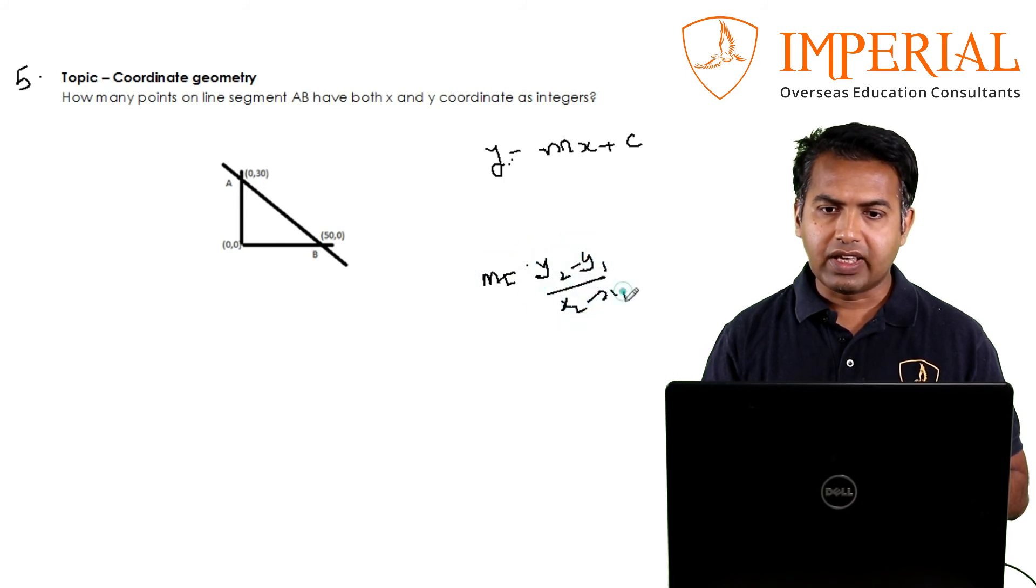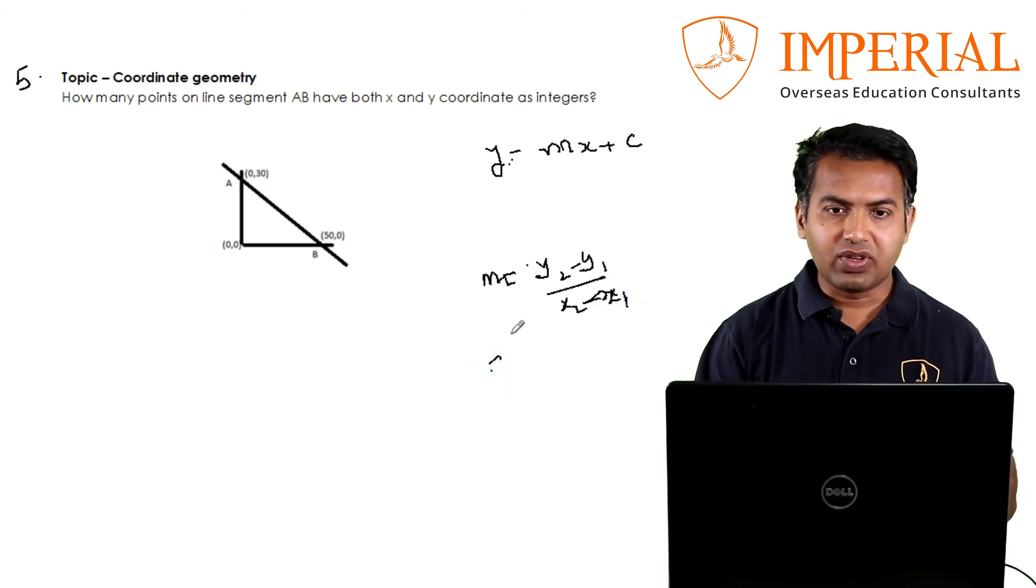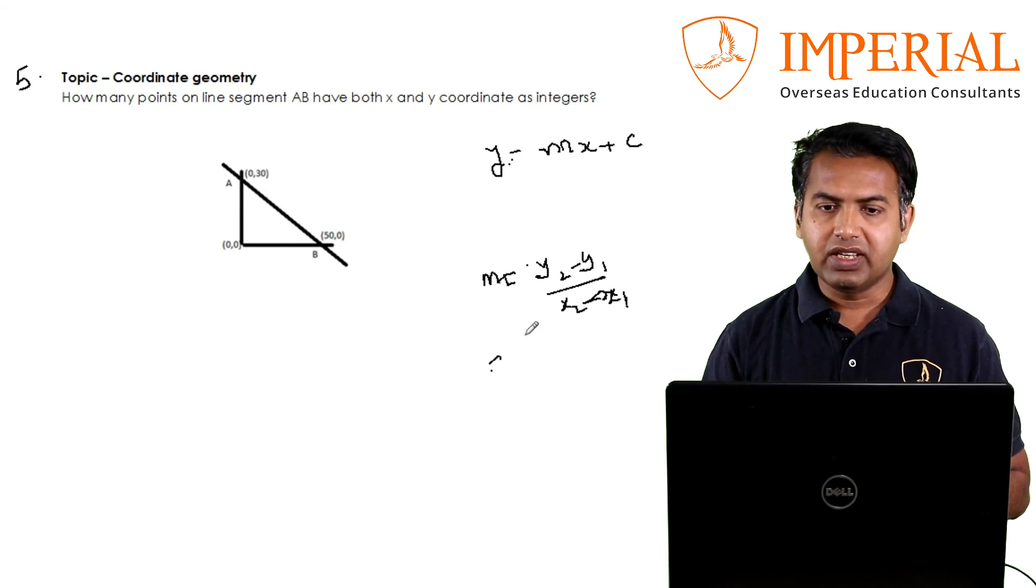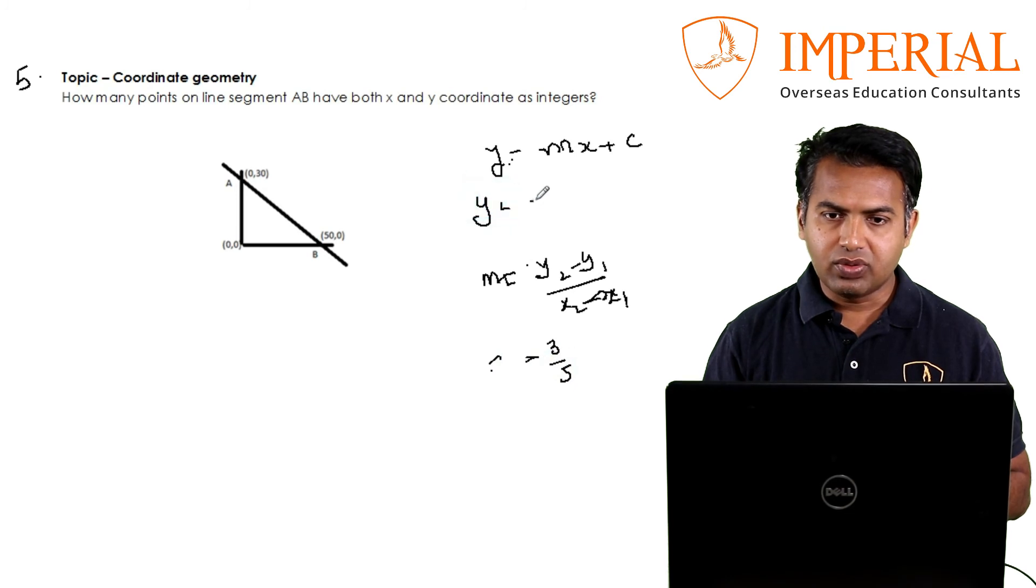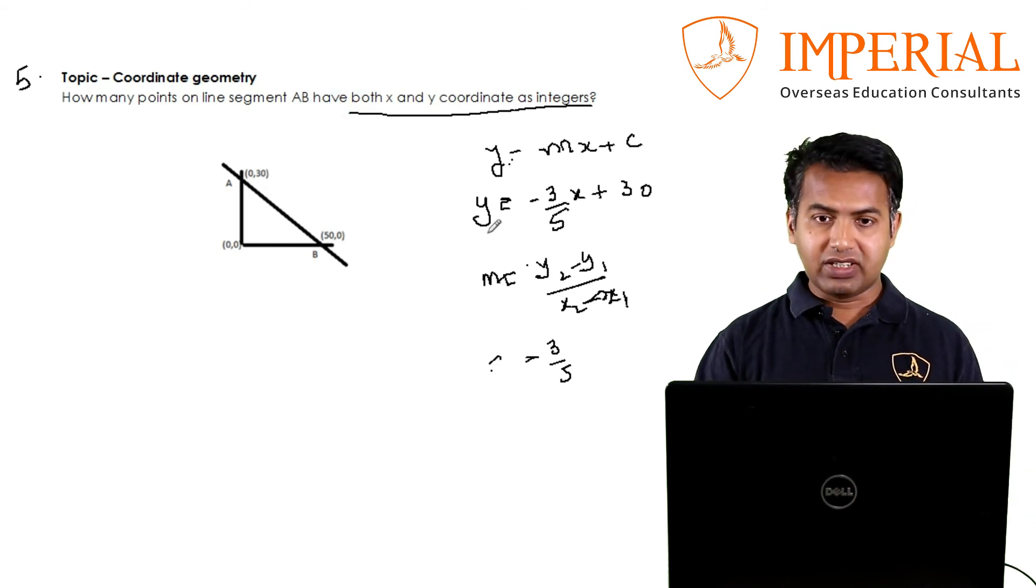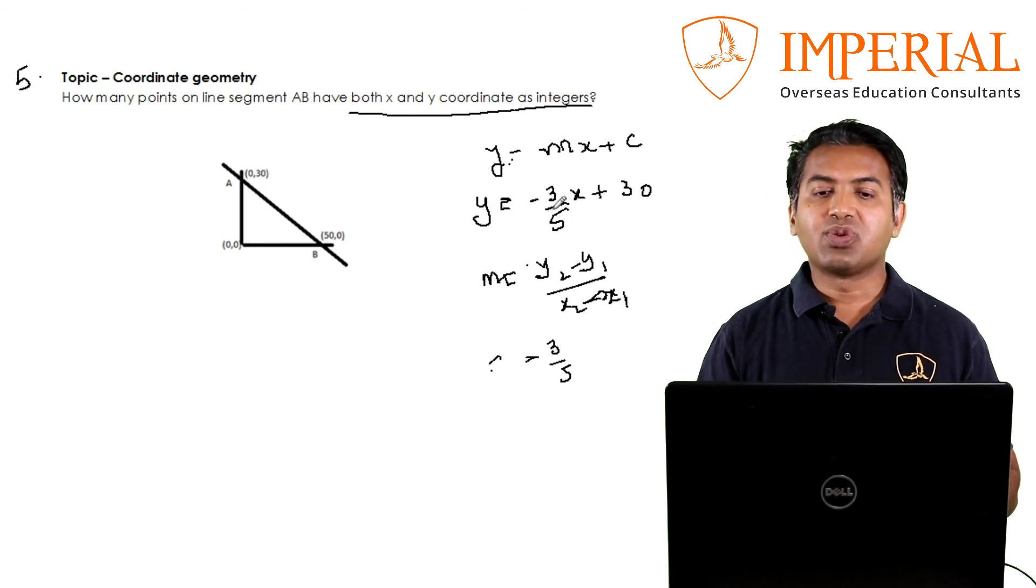We'll use these two concepts here. Here's your equation, there's the two points. Your slope here, we'll use this formula, so you will get 30 minus 0 upon 0 minus 50, so it'll be minus 3 by 5. So y equals minus 3 by 5 x plus the y intercept here is 30. The question says both x and y coordinates have to be integers. If you look at this equation, when will y be an integer? When x is a multiple of 5.